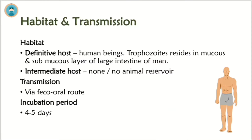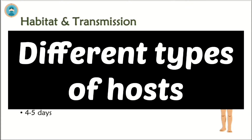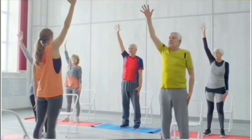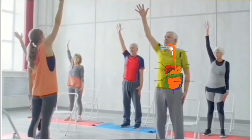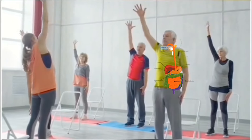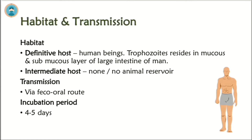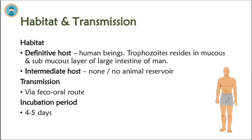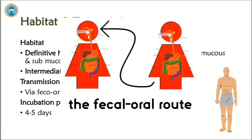Regarding habitat and transmission: Entamoeba histolytica has humans as its definitive host, because trophozoites reside in the mucous and submucous layer of the large intestine of man. Entamoeba histolytica has no intermediate host. Transmission occurs via the fecal-oral route.